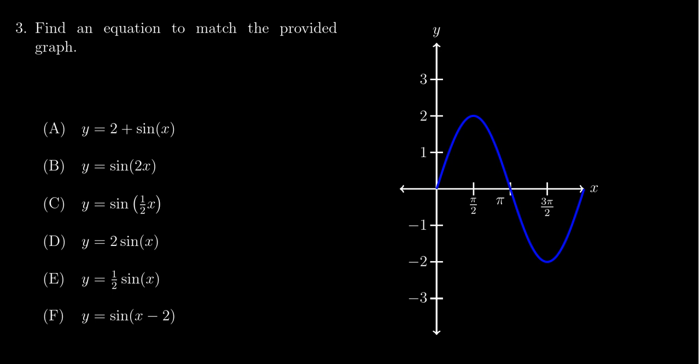The most general sine wave would look like y equals some amplitude times sine times, you could have some coefficient, some type of shift, some type of x minus h over b, like so, plus k. This is the most general form we could see.